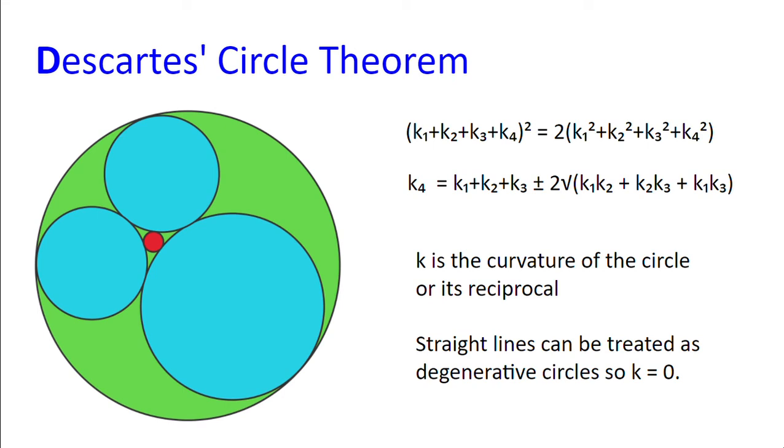And straight lines could also be treated as degenerate circles where R equals 0 and K equals 0.